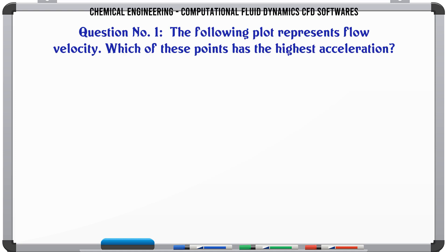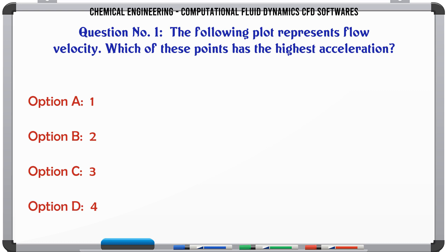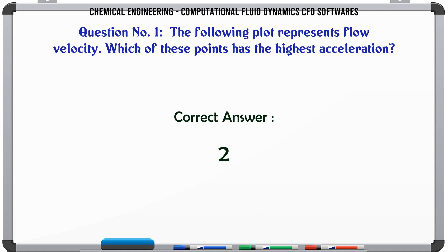The following plot represents flow velocity. Which of these points has the highest acceleration? A. 1. B. 2. C. 3. D. 4. The correct answer is 2.